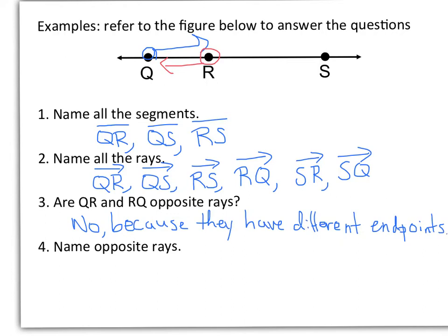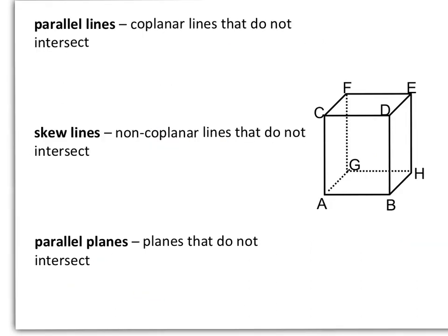And finally number 4, name a pair of opposite rays. Alright, we have, actually we only have really one choice here. We can have ray RQ and then starting with the same endpoint but going the opposite way, we can have ray RS.